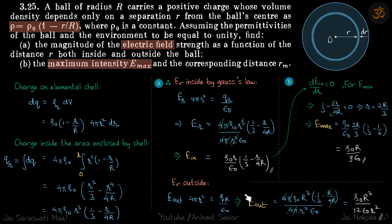So we got E in and E out, now let's find the maximum intensity. So outside the intensity cannot be maximum because the field has to decrease outside. But inside somewhere we can find the maximum field.